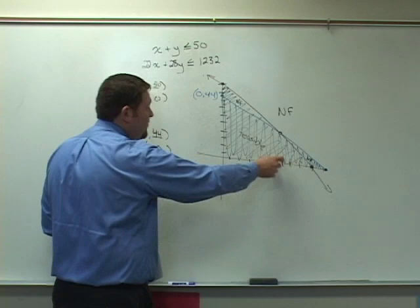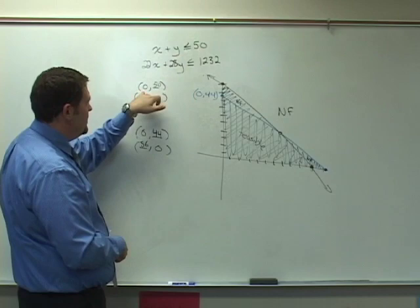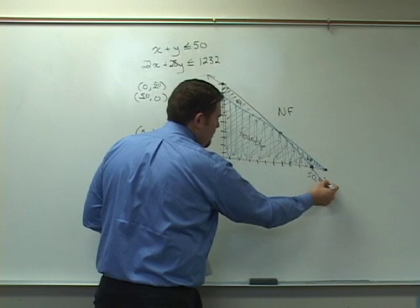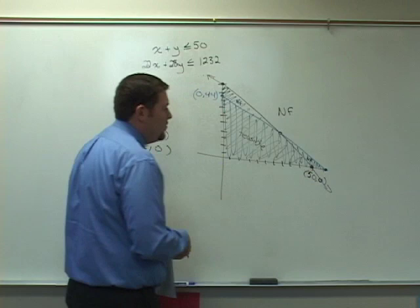Our next label we're going to look at is the one that was done here in black. This is the x-intercept for the first equation. We found that when y was equal to 0 on the first equation, x was equal to 50. That would represent 0 peach trees and 50 apple trees. So that's our second label to indicate the corners.